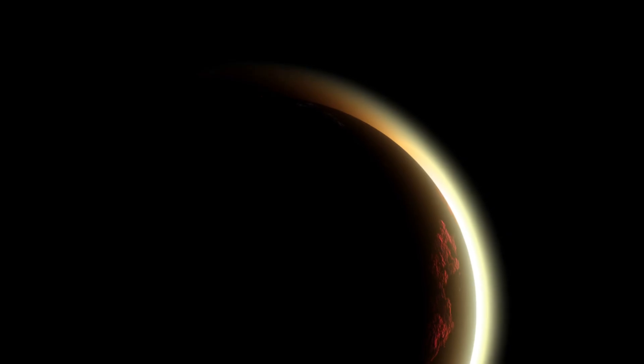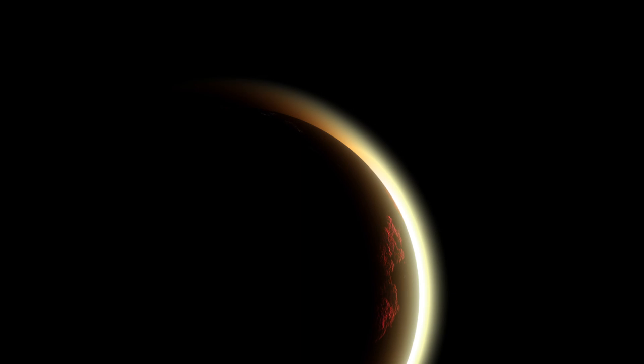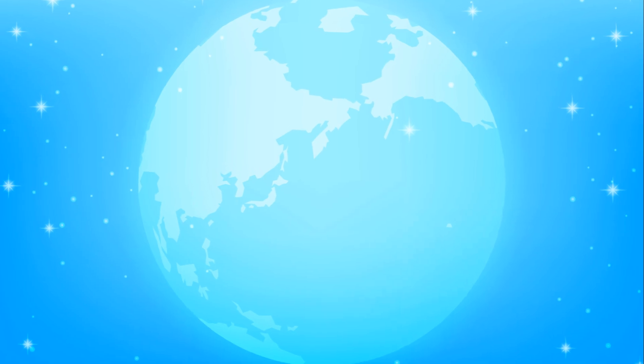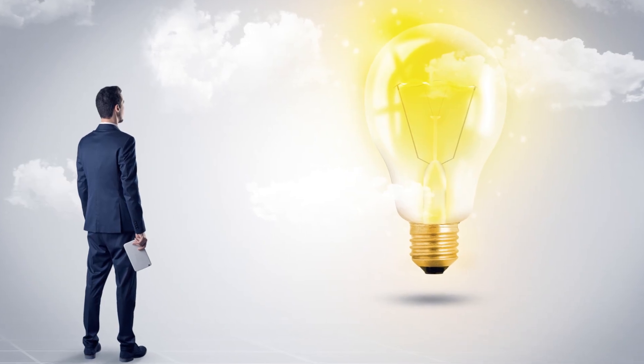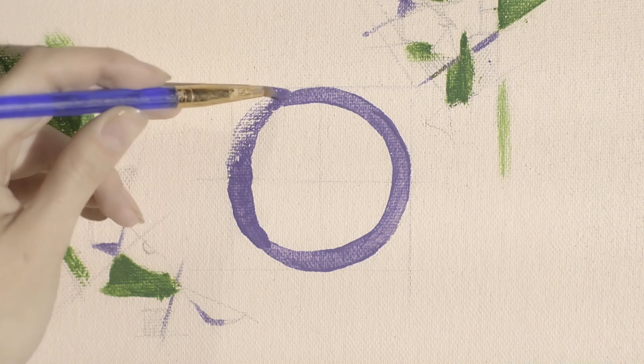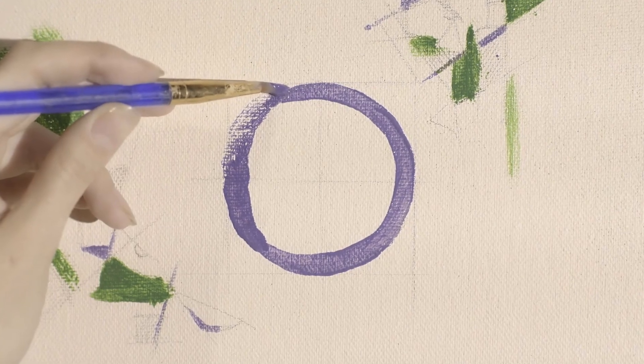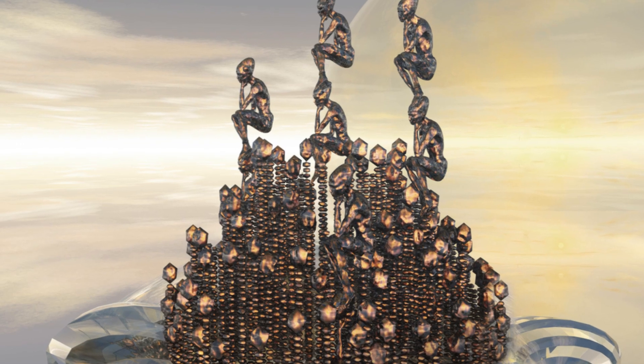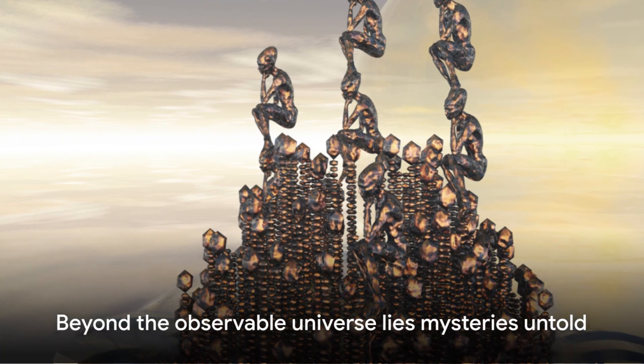Yet, what's perhaps even more remarkable is what this observable universe encompasses. It contains all of the galaxies, stars, planets, and other celestial bodies that we know of. It includes everything that has ever been observed or that could potentially be observed from Earth. But remember, these are just the parts of the universe we can see. Beyond that, there are mysteries untold.